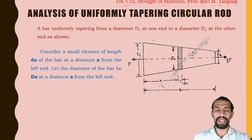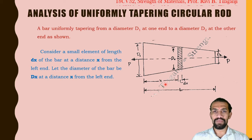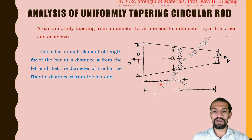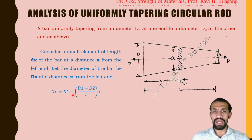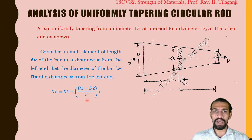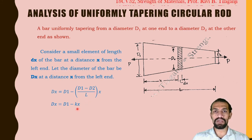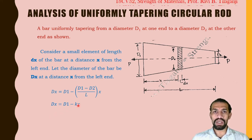Consider a small element of length dx at a distance x from the left end. Let the diameter of the bar at distance x be dx. The diameter dx equals D1 minus (D1 minus D2) divided by L, which we substitute in terms of K. So dx equals D1 minus K times x.